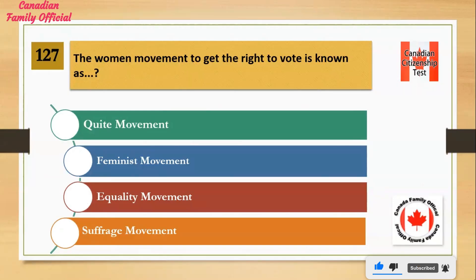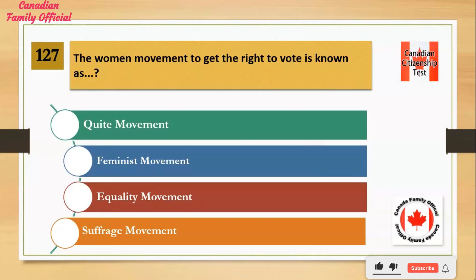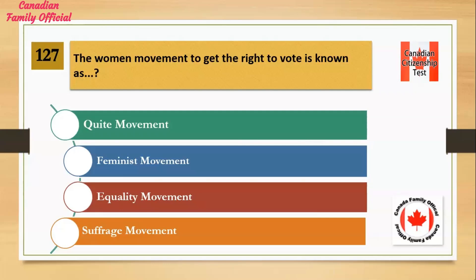The women's movement to get the right to vote is known as: Number 1: Quiet movement. Number 2: Feminist movement. Number 3: Equality movement. Number 4: Suffrage movement. And the answer is Suffrage movement.